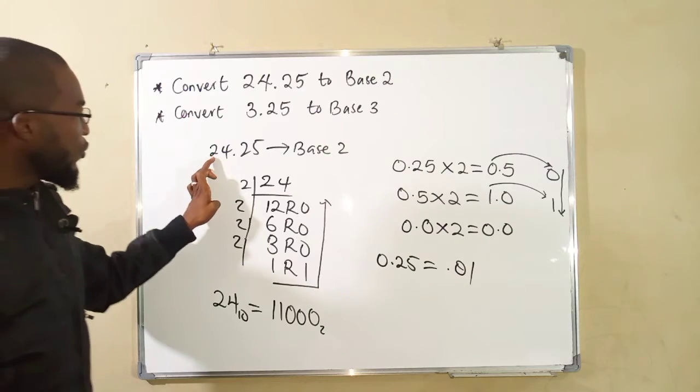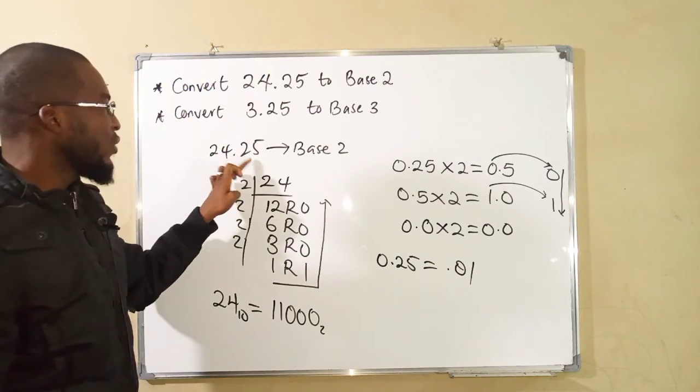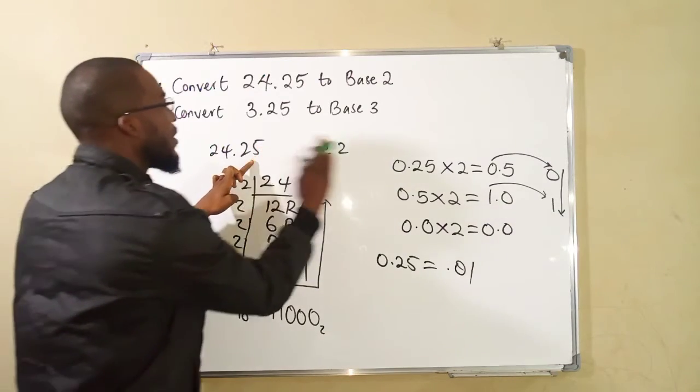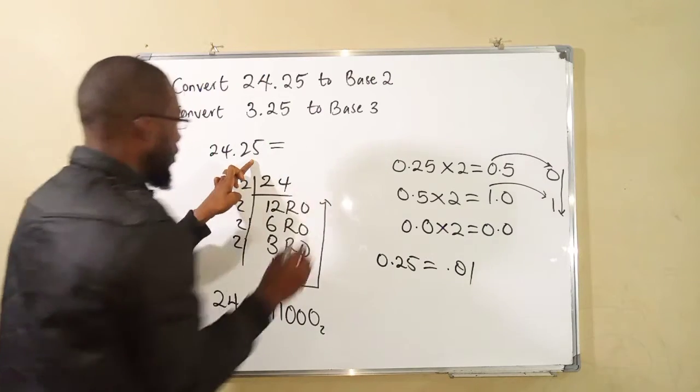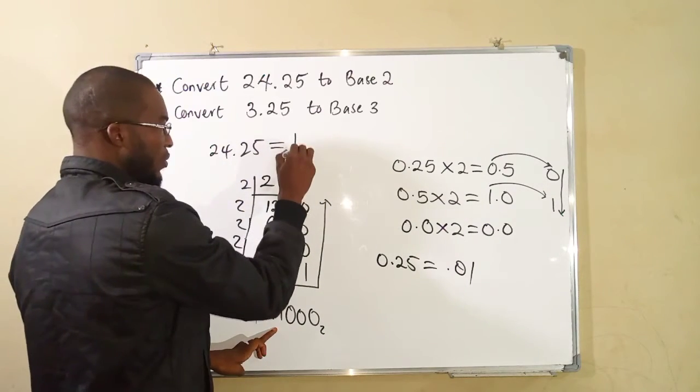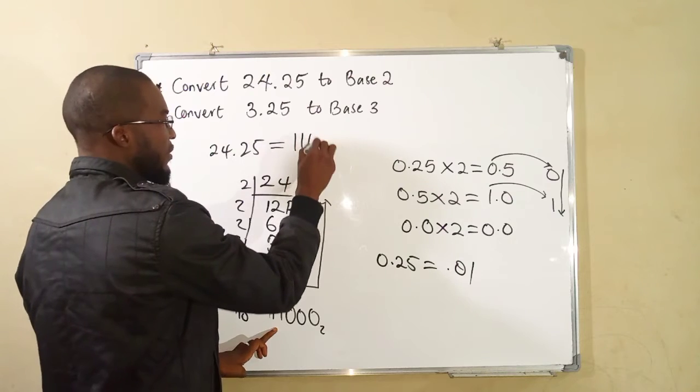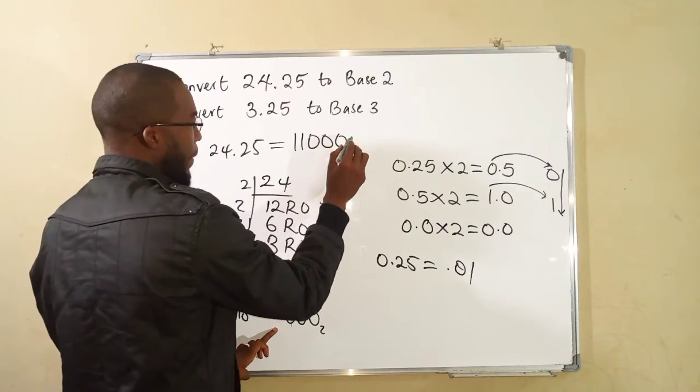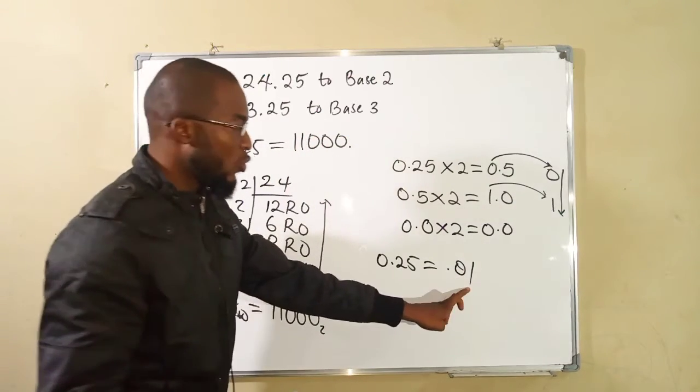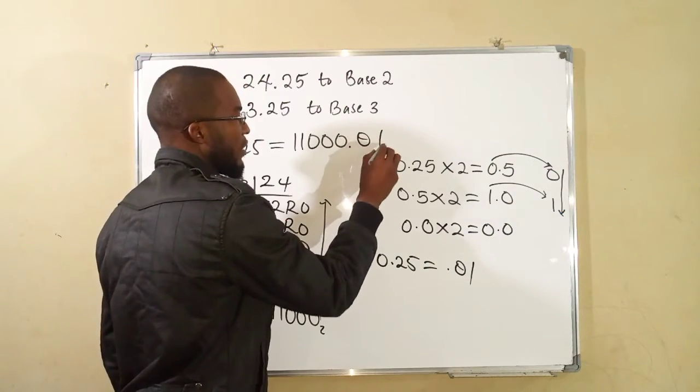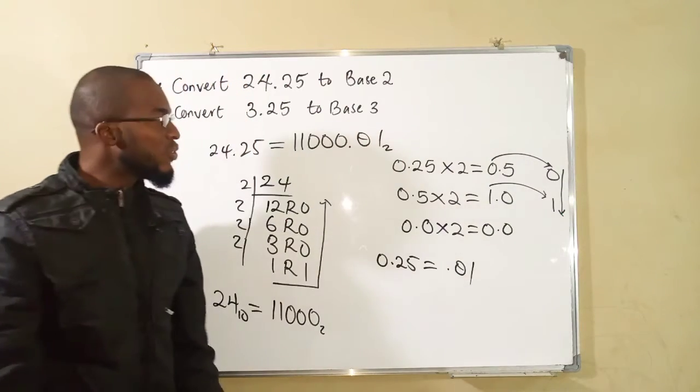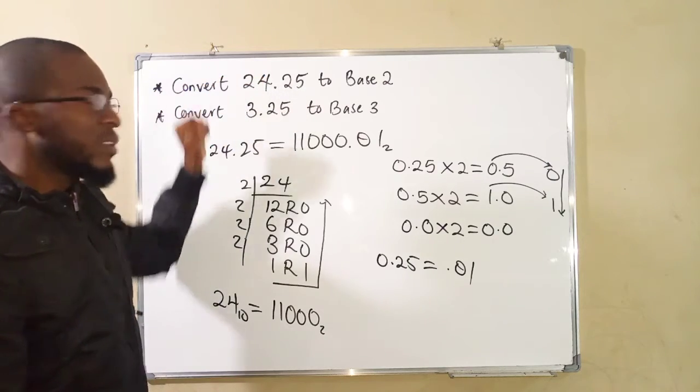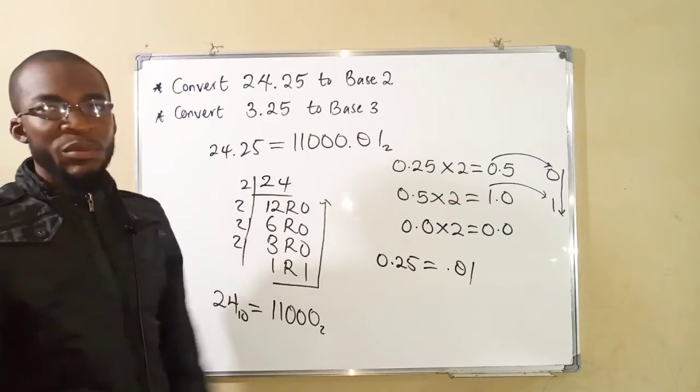Finally, 24.25 is the same thing as the whole number part. We have 1, 1, 0, 0, 0 point 0, 1 in base 2. So this is how to convert numbers that contain decimals to other bases.